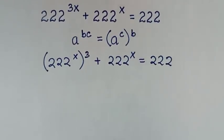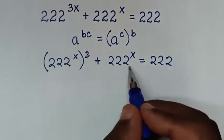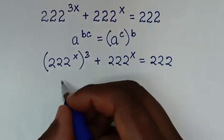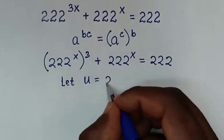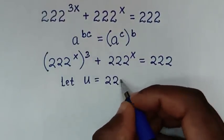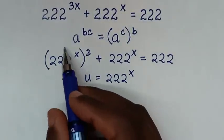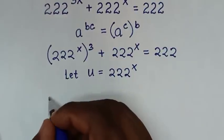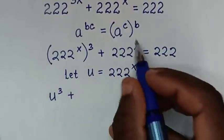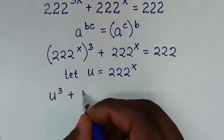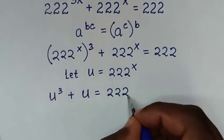In the next step, 222 power x is common, so we'll let u equal to 222 power x. So it will be u power of 3 plus u is equal to 222.